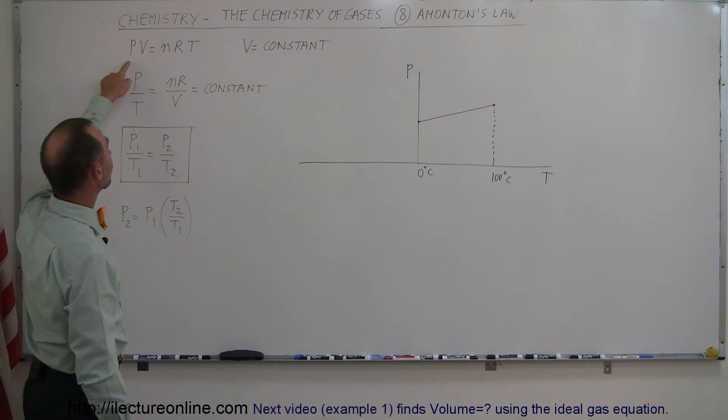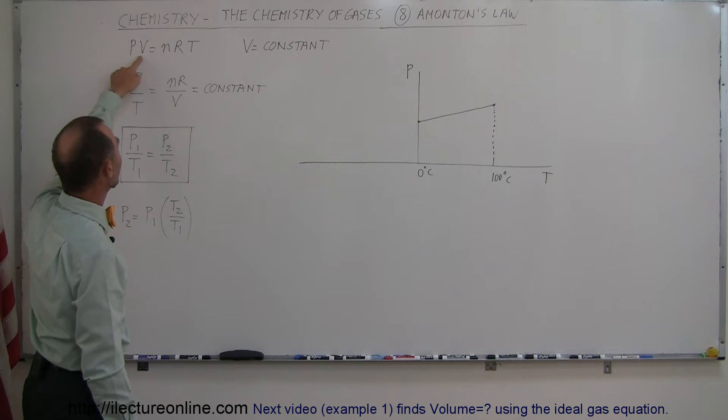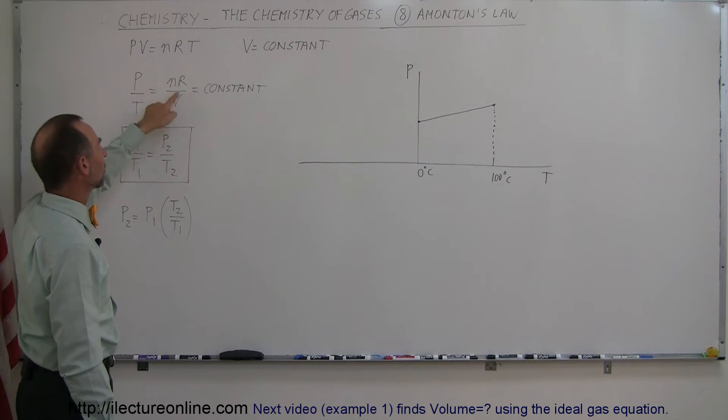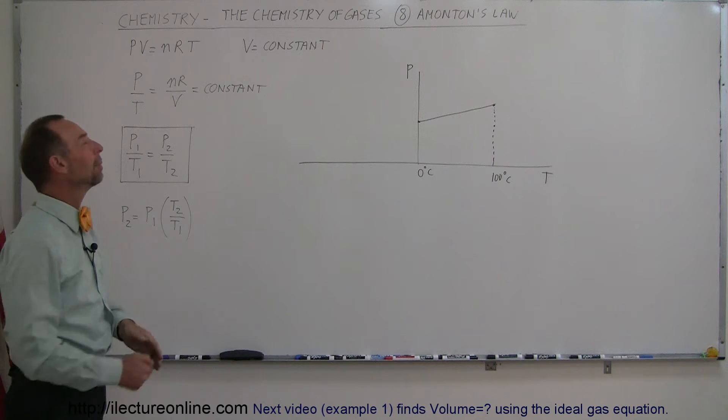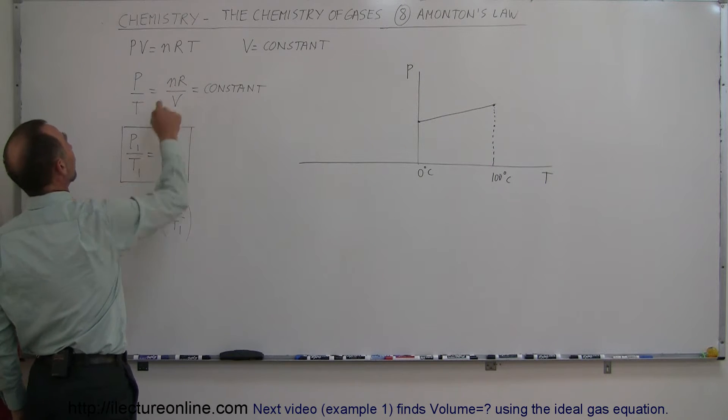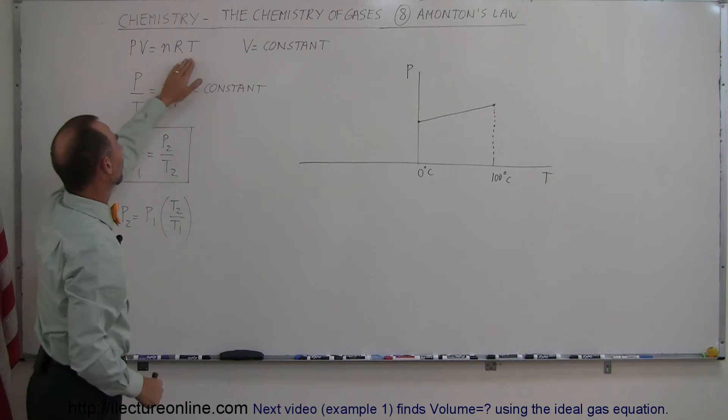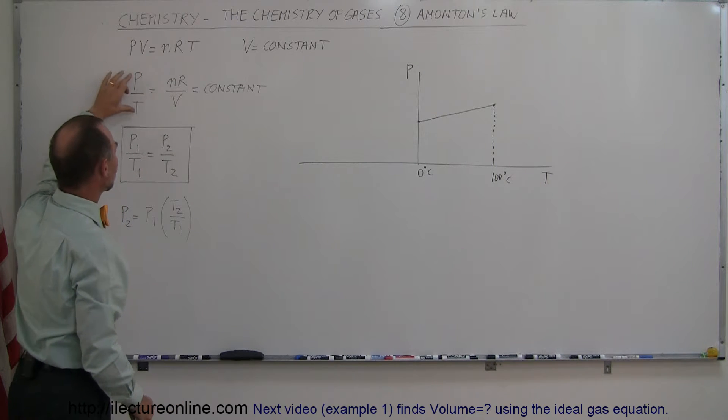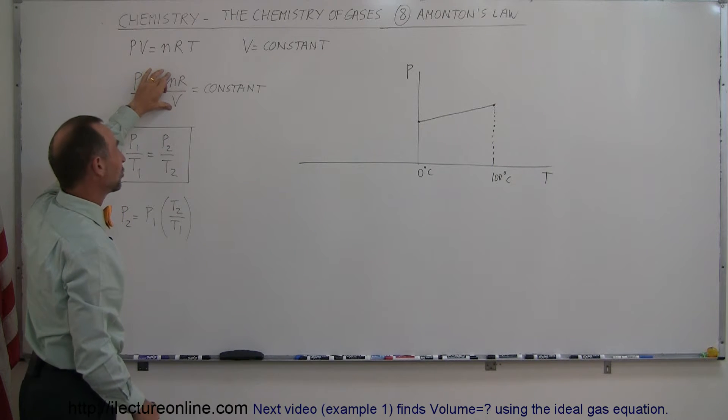If we assume that the volume is constant, we can move the V over to the other side of the equation, lump it up with the number of moles and the gas constant, and move the temperature to the left side. So on the left side we have variables that change, on the right side we have variables that do not change—they're constant.